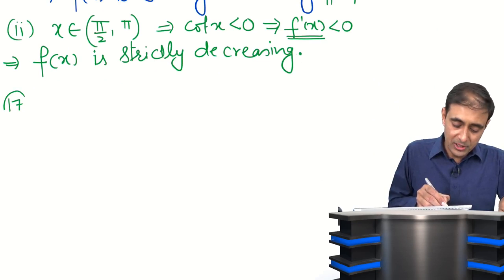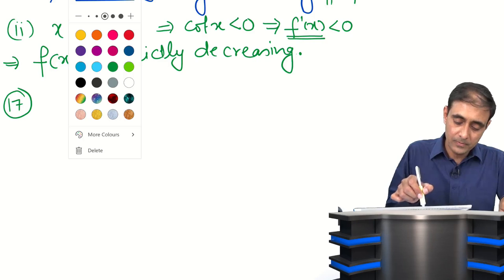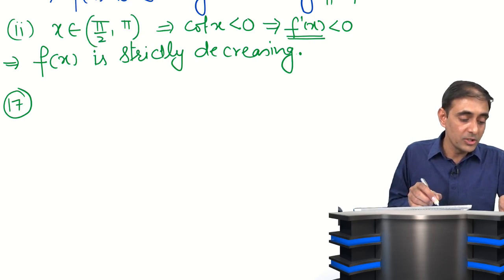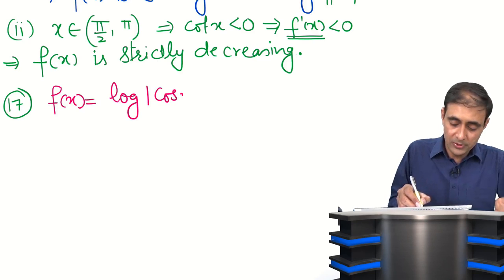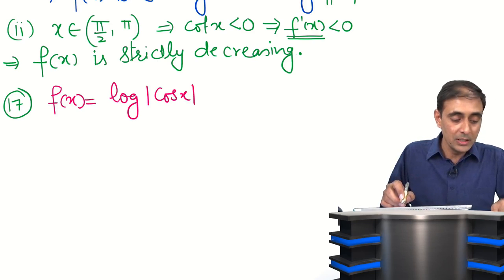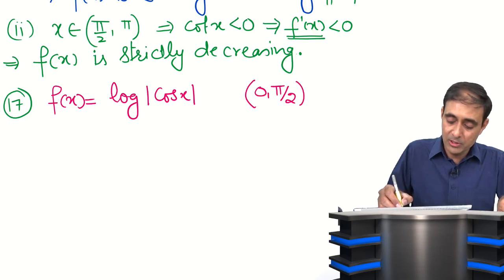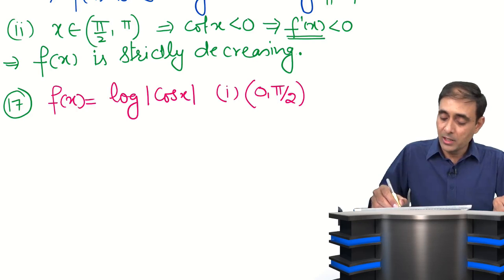Let us see question number 17. f(x) = log|cos x| is strictly decreasing on the open interval (0, π/2) — that is the first interval given. And the second interval given is (π/2, π). So we need to prove the behavior on both intervals.